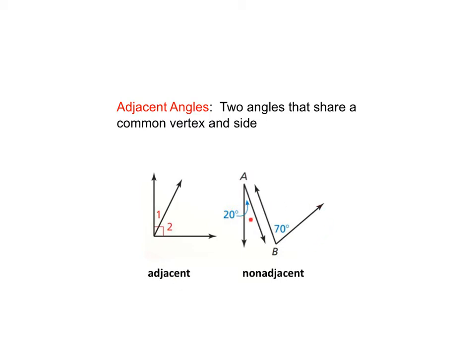Here angle A and angle B don't have a common vertex or common side. They are non-adjacent angles.